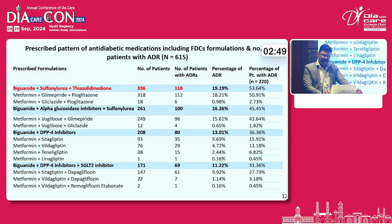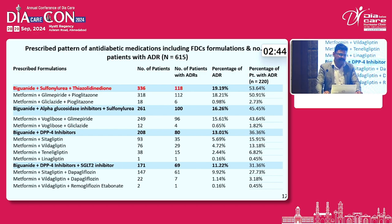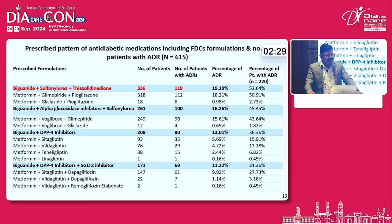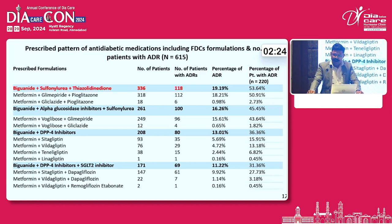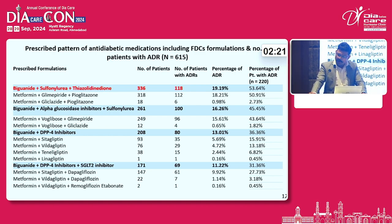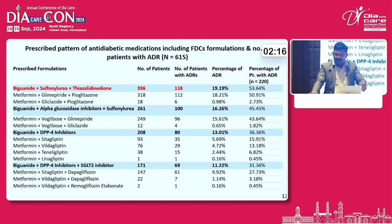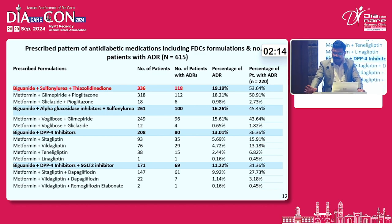Now I will talk about the prescription pattern. In T2DM patients, polypharmacy is commonly used and various FDCs are used. The most frequently used FDC is metformin, glimepiride, and pioglitazone. 380 patients were prescribed this particular medicine, out of which 112 patients were identified with at least one ADR. The percentage of prescriptions is 18.21% and percentage of patients with ADR is 50.91%.